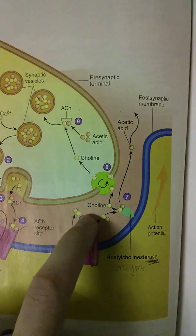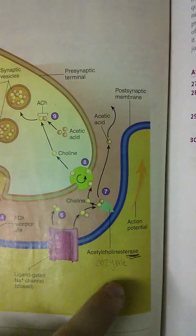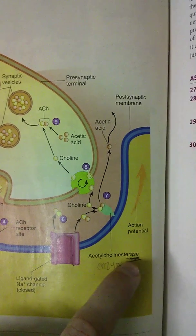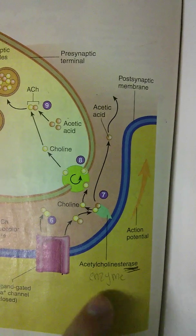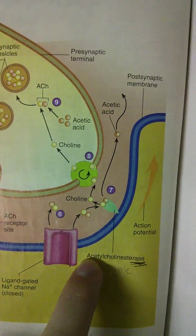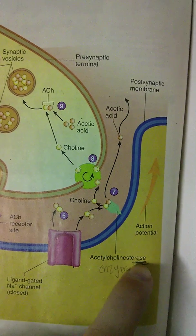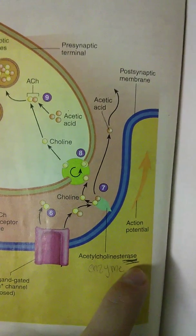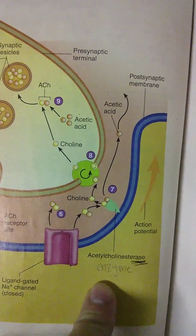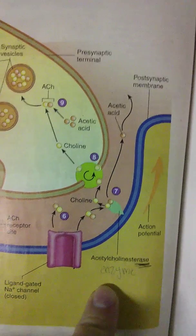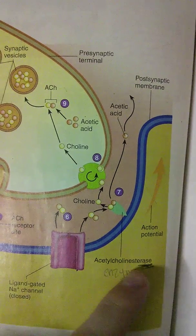So what happens next is that an enzyme called acetylcholine esterase comes in. And that's a long word, but it's actually really useful because basically its function is in its name. Its name is acetylcholine esterase, and the last part says erase. And an enzyme, its purpose is to break down chemicals or speed up chemical reactions.